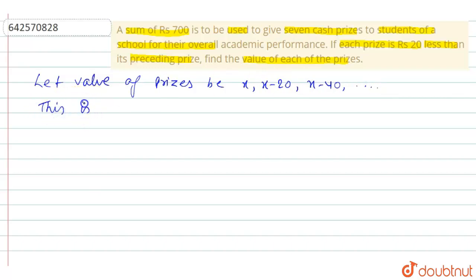So this is an arithmetic progression AP, where first term denoted by A is equal to x. Difference denoted by D is equal to second term minus first term, so that will be minus 20.